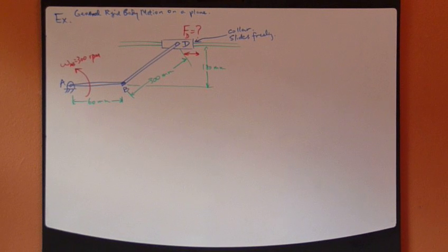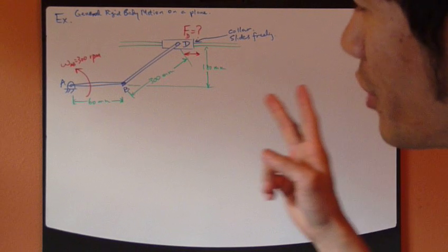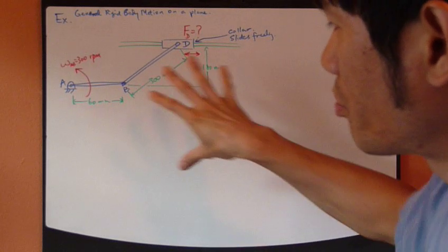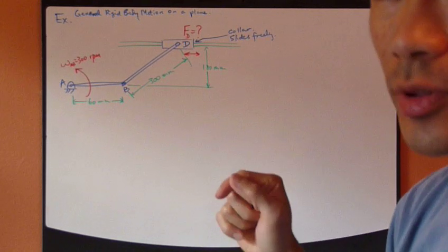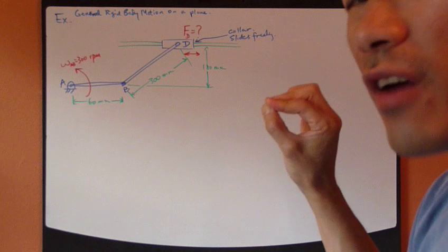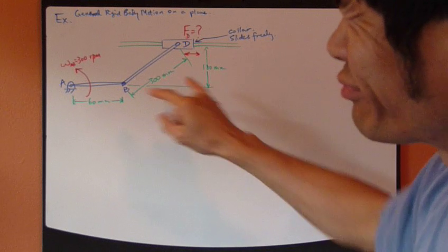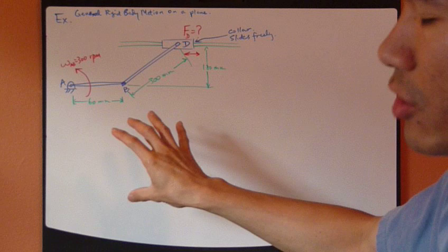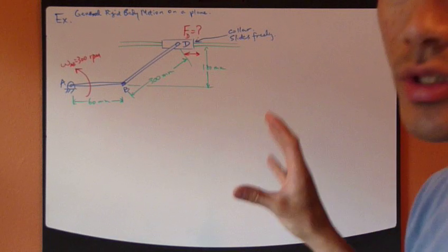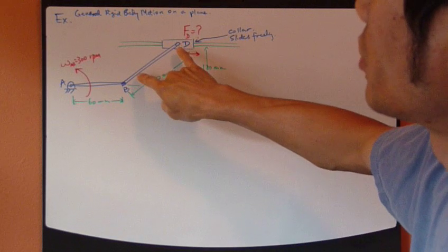Let's put one more example. The previous two examples involve pure rotation and pure translation. Now this example is a little more involved. It involves general rigid body motion which has translation and rotation. Particularly we're looking at this link right here.